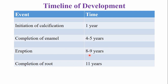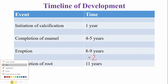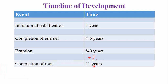If you add plus two — nine plus two is eleven — so the root is completed by the age of eleven years, because when the tooth emerges into the oral cavity only two-thirds of the root is formed. The remaining root is formed within two years, so it is completed around the age of eleven years.